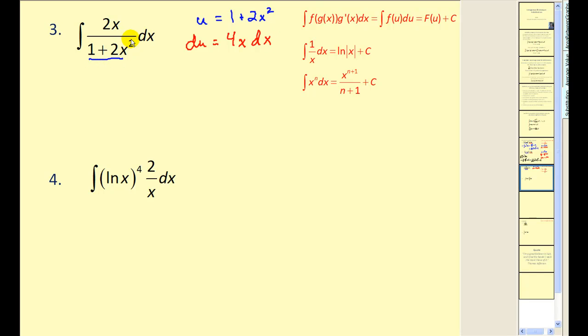Here's the u. Notice what's left is 2x dx, and we have 4x dx. So what I'll do is divide by two, so we have (1/2)du equal to 2x dx. That'll make it match perfectly.